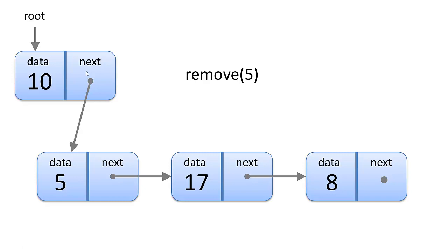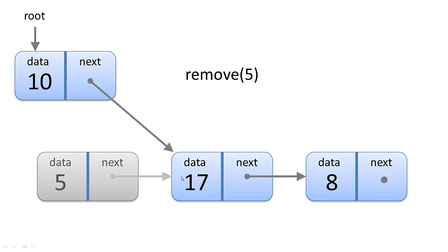For remove, if we want to remove a 5, first we have to find it. If the value isn't in the list at all, we return false or None. In this case, the 5 is present. We start at the root, iterate through the list, and find it in the second node. To remove it, we point the previous node's next pointer to the 5 node's next node. By doing that, we bypass the 5 node when iterating from the root — so although the 5 node still exists in memory, it's no longer part of our linked list.